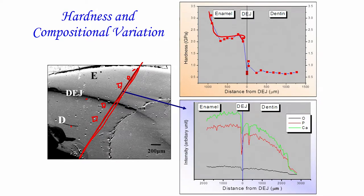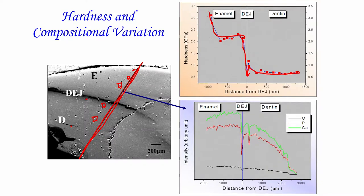The hardness in the enamel part is higher, around 3 to 3.2 GPa. As you go to the dental enamel junction the hardness drops, and in the dentine it is around 0.75 GPa. Many materials can satisfy this hardness requirement. However, the most important thing to realize is that there is a gradient in hardness, which is more difficult to create in a given microstructure — it requires experience in materials processing and microstructural design.